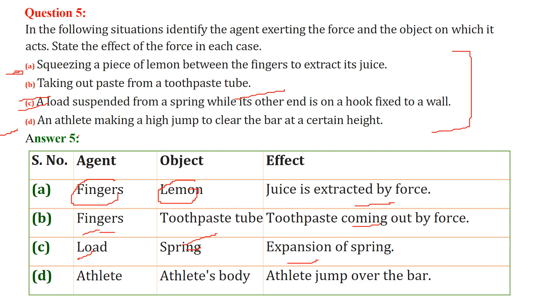Next is an athlete making a high jump to clear the bar at a certain height. So here we have athlete as the agent. The object is again the athlete body, because athlete, this is the bar, he is going to jump over this bar so he is taking his own body. So the object will be athlete's body and the effect will be athlete jumps over the bar.